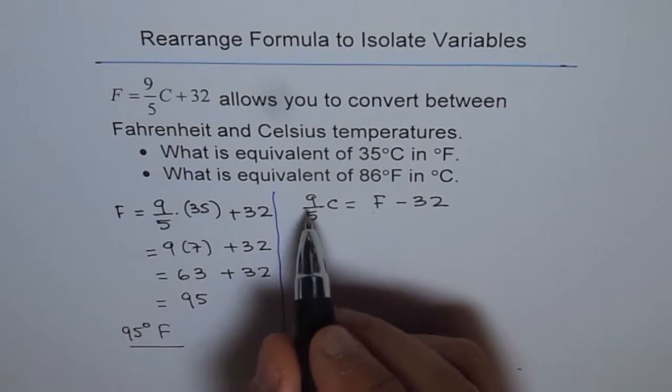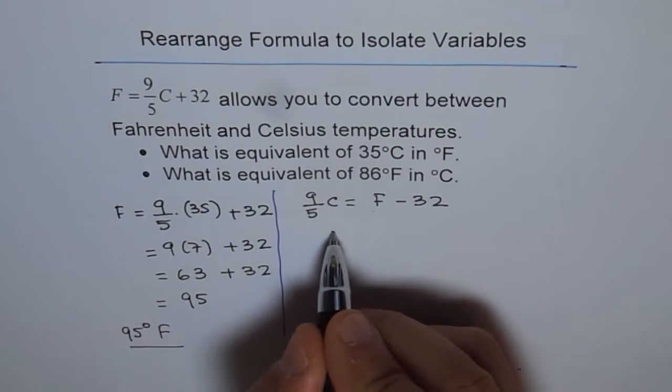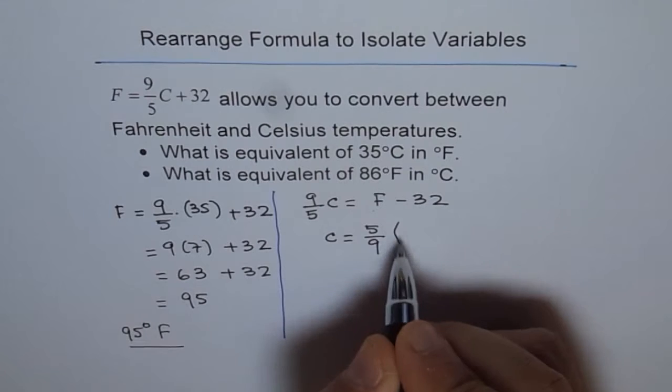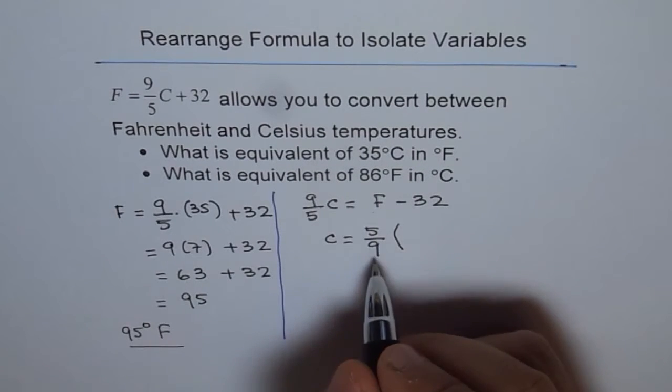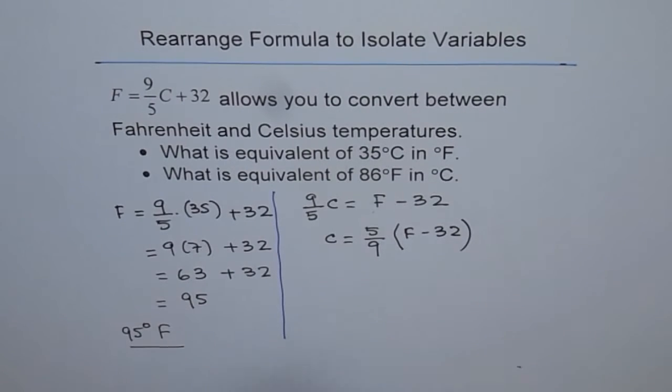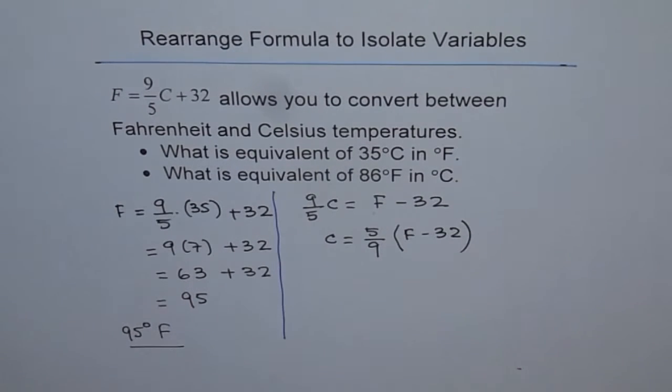Now to find C, I should multiply this by 5 over 9. So C is equal to 5 over 9. And don't forget to put it in bracket, because both should be multiplied by 5 over 9. F minus 32. So that is what you get as a rearranged formula.